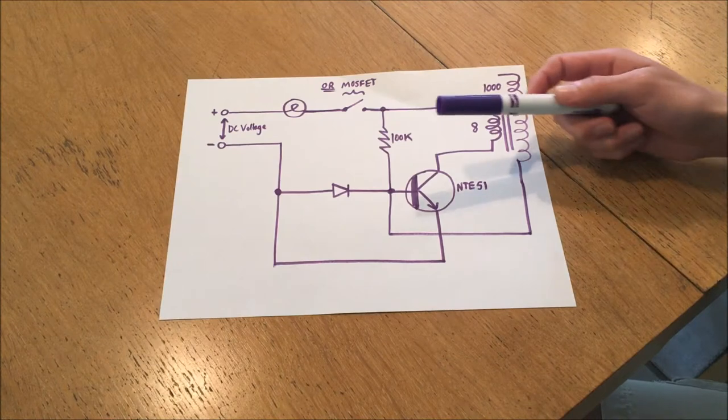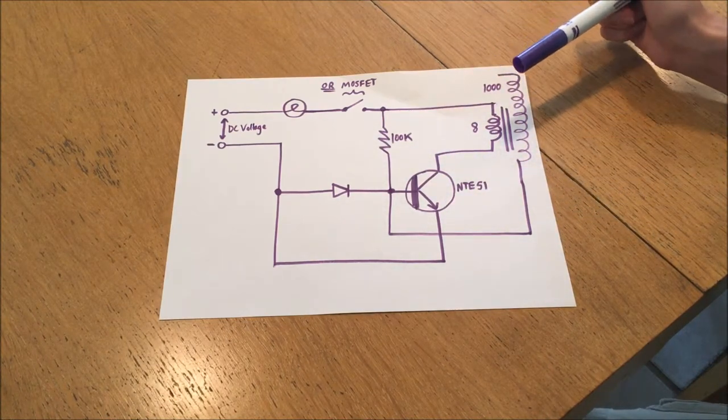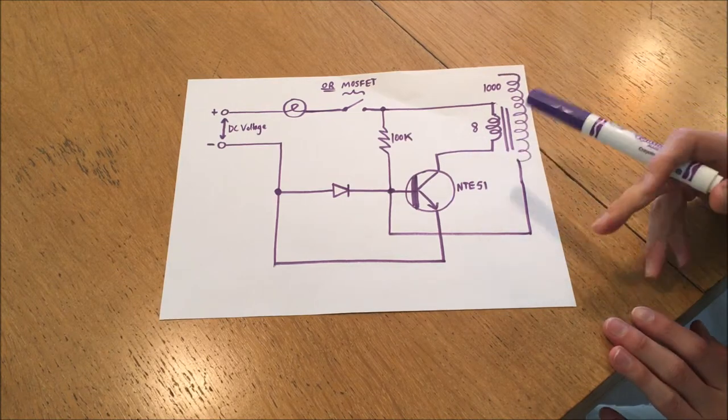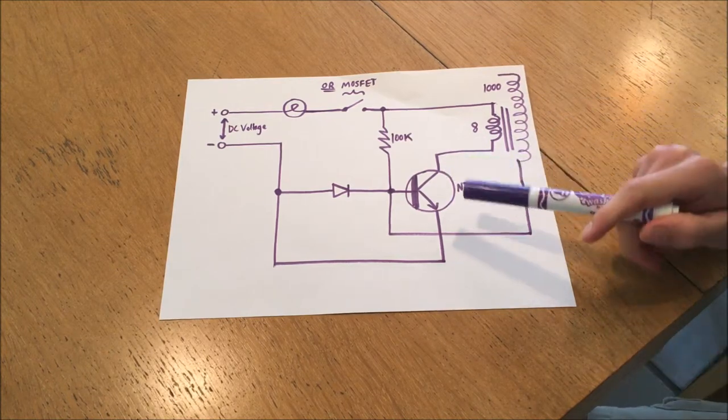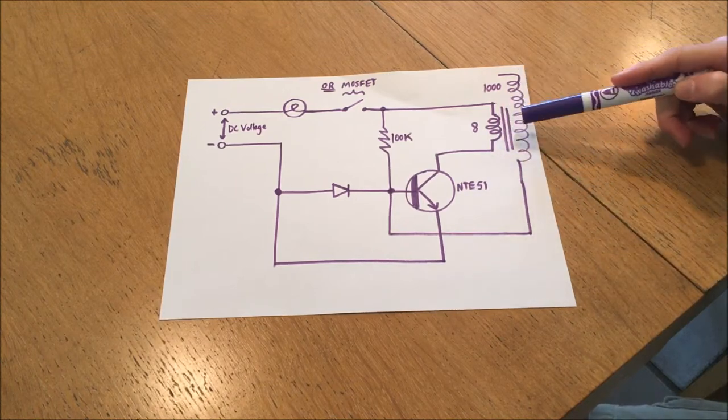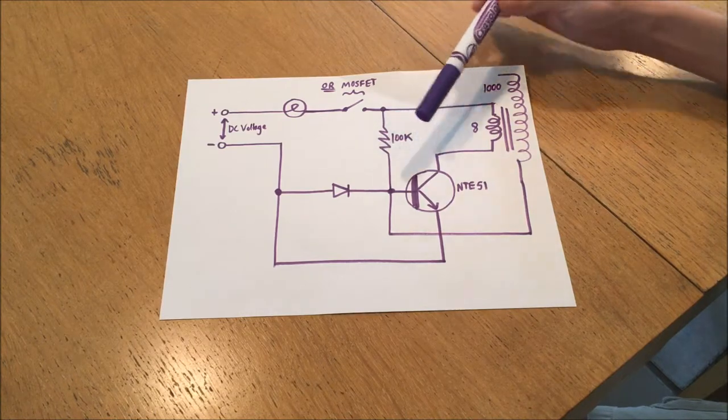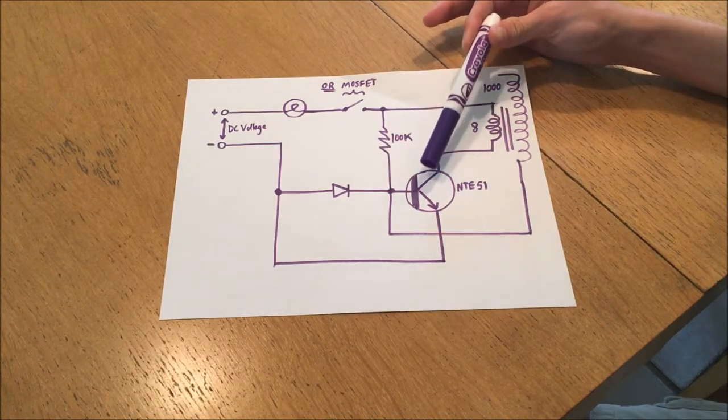Now that I've shown you the operation of the Slayer exciter coil, I'm going to show you basically the theory behind it. All the Slayer exciter coil is, is a transistor oscillator circuit with an air-core transformer connected to it. To make it operate, you're essentially relying on this transistor switching on and off.